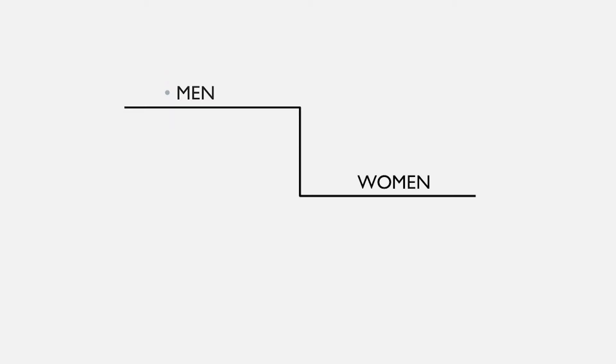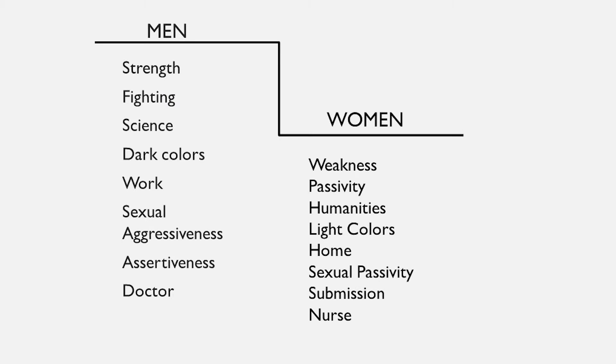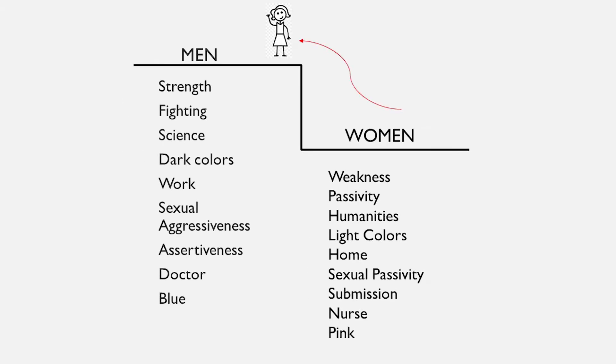Even though we think of ourselves as knowing better now, these ideas persist in society. Society thinks of gender kind of like a stair-step model, with men on the upper step and women on the lower step. All of the things that we associate with men are on the upper step, and all of the things we associate with women are on the lower step. Now, women's rights movements have fought for women to be equal to men, and our society has complied in certain ways.